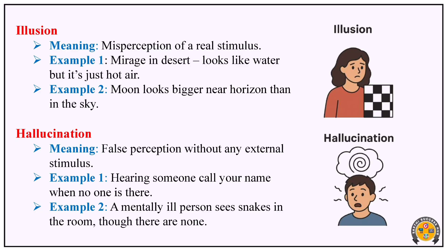Another example of illusion: the moon looks bigger near the horizon than in the sky. Our mind compares and misjudges the real object. So illusion is a wrong interpretation of a real external object that is actually present.